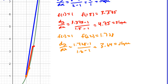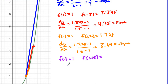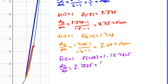Now let's take a point even closer. Someone said f(1.05) — that's really close to 1. So 1.05³ = 1.157625. We're going to do the change in y over change in x: (1.157625 − 1) / (1.05 − 1) = 0.157625 / 0.05 = 3.1525. That's our slope.